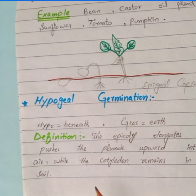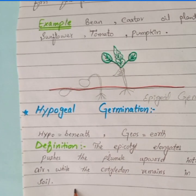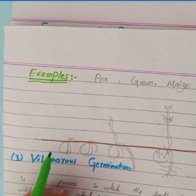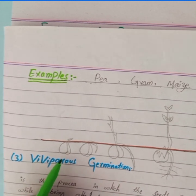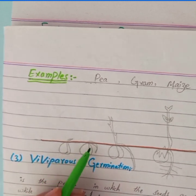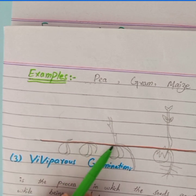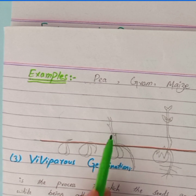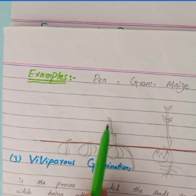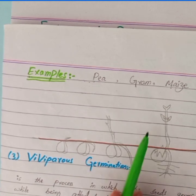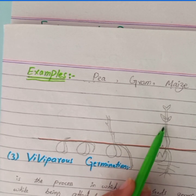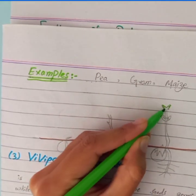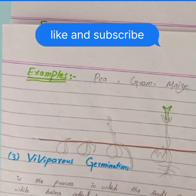The cotyledon remains under the soil in hypogeal germination. In the diagram, this is the seed sown in the soil — it will remain under the soil layer. The cotyledon stays under the soil while the plumule moves upward into the air, giving rise to new branches.